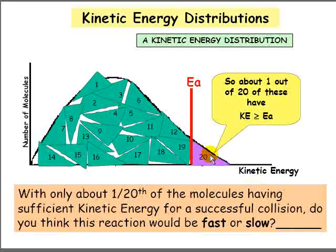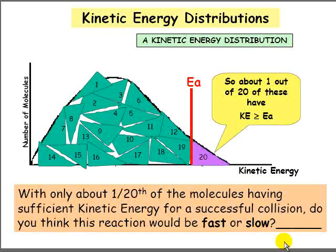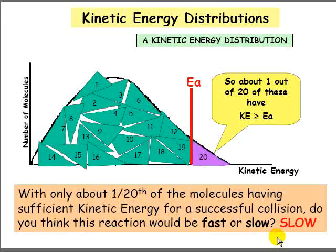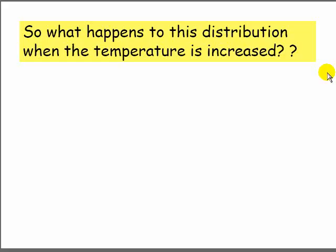Because there's only 1 in 20 molecules that have sufficient energy, this reaction will probably be slow. So what happens to this distribution if the temperature is increased? Let's have a look at the model.